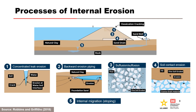Four of these processes are the same as in ICOLD Bulletin 164, with internal migration being added by the federal agencies. ICOLD Bulletin 164 describes a stoping process as global backward erosion and considers this a form of backward erosion; however, there is no consensus on this terminology. USACE added 'soil' in front of ICOLD's term 'contact erosion' to emphasize that this process occurs at the fine-coarse soil contact, not the soil-rock contact.